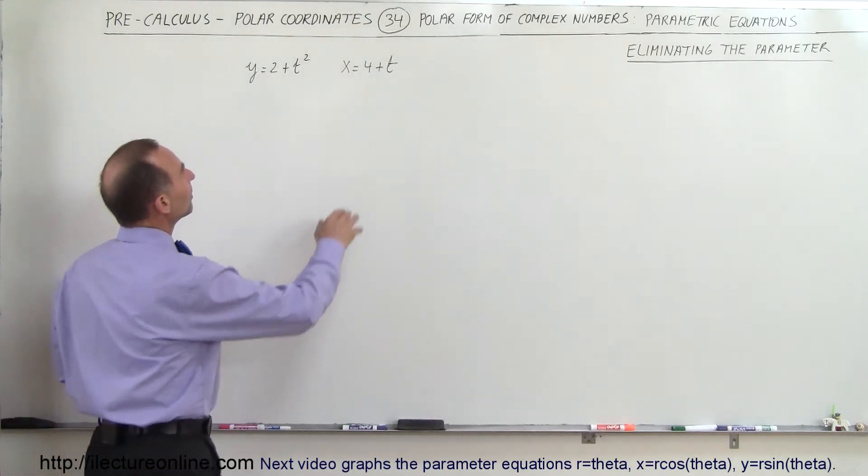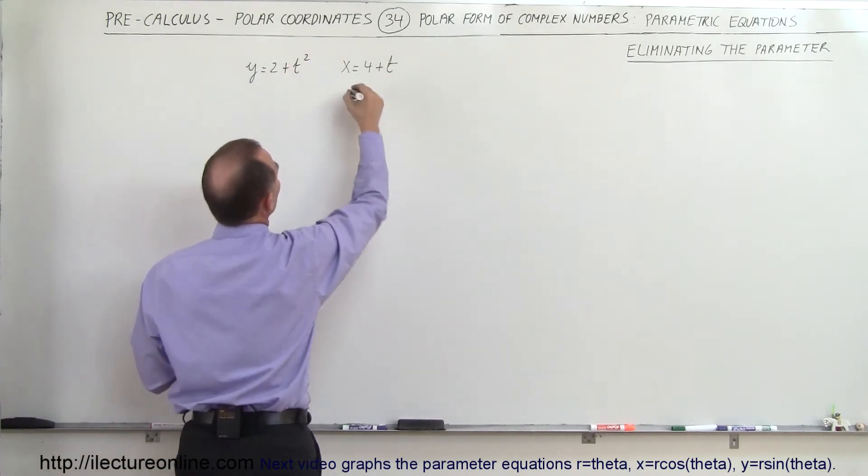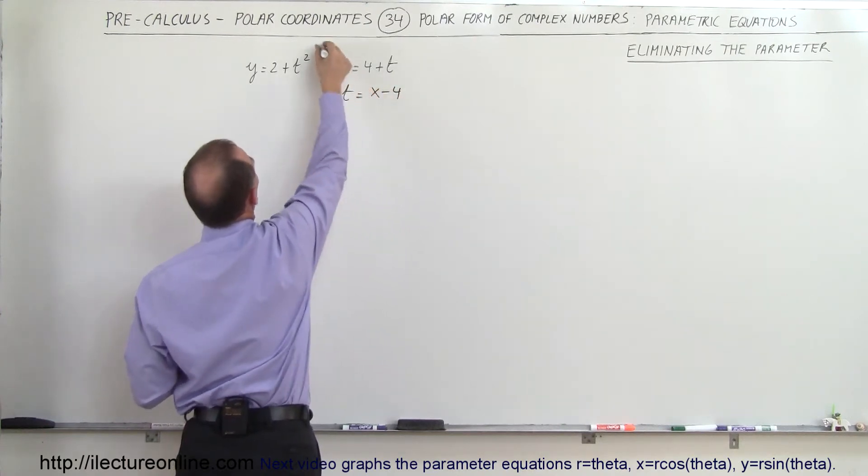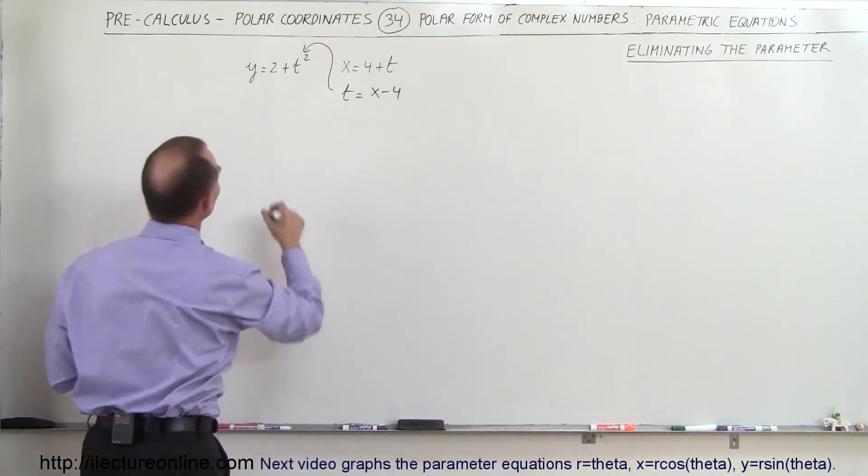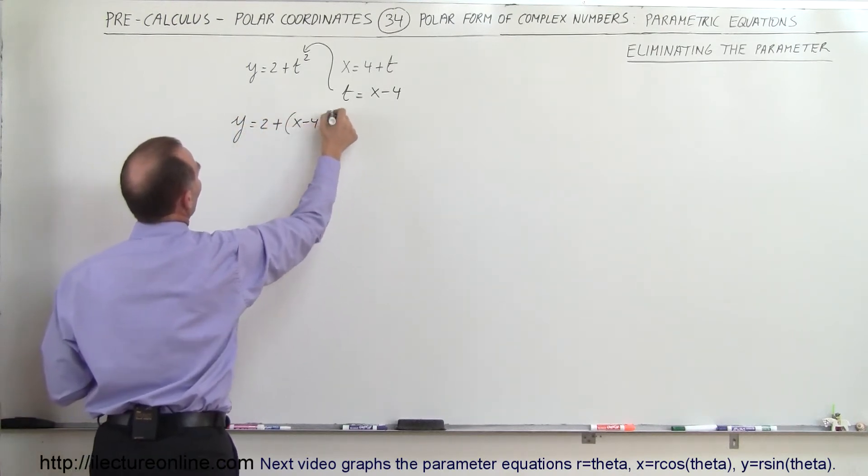We're going to eliminate t by solving this equation for t and plugging it into that equation. Here we can say that t is equal to x minus 4, and now replace that in for that equation. So now we get y is equal to 2 plus the quantity x minus 4 squared.